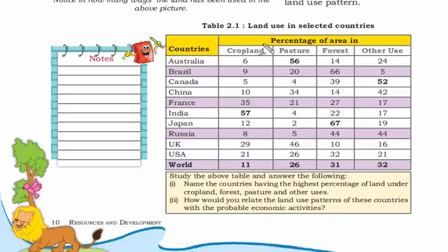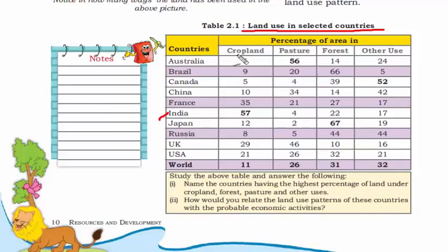Just look at this table where land use in selected countries is showcased. See how much India uses its land for crop purposes — 57% of its area is under cropland. That's why we say India is an agricultural country where agriculture is the prime occupation.